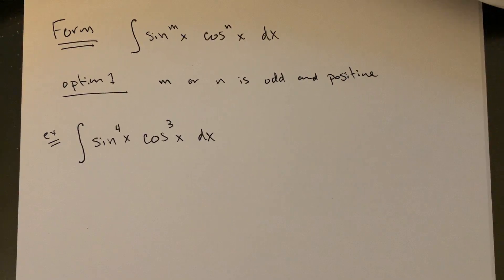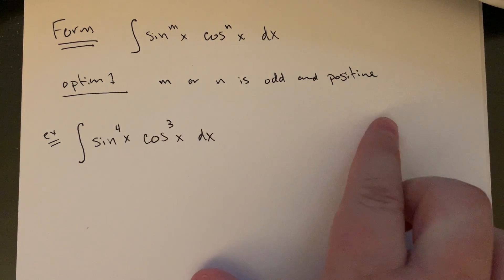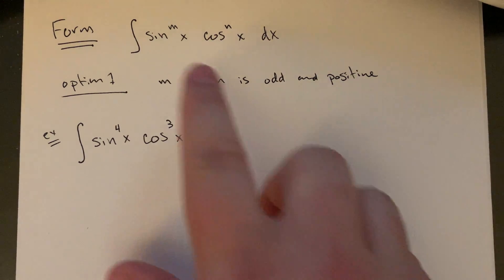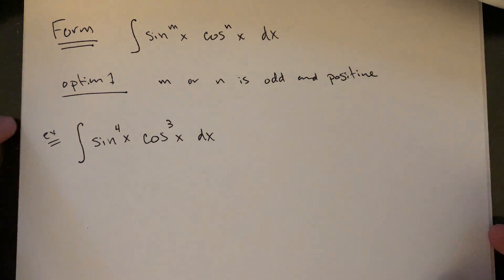Let's look at this generic form: sine to the m of x times cosine to the n of x — sine and cosine each raised to different or the same powers. The way we break it down is based on whether the powers are even or odd. The best case scenario is if either the m or the n value is odd and positive, so you'd like to have either an odd power on your sine or an odd power on your cosine.